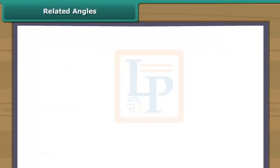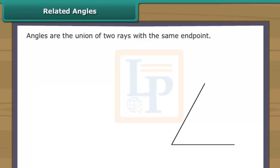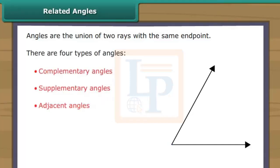Related angles. An angle is defined as the union of two rays that have the same end point. The sides of the angles are the two rays, while the vertex is the common end point. There are four types of angles. They are complementary angles, supplementary angles, adjacent angles and vertical angles. Now take a brief look on all the angles.